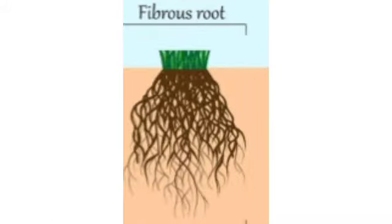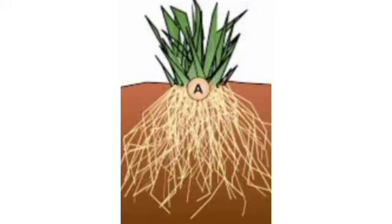Then fibrous roots. Some plants like grasses, wheat and coconut don't have a main root — they have a bunch of small roots called fibrous roots. They have many thin, hair-like roots and a bushy appearance. Some examples are grass, wheat, onion and garlic. They are called fibrous roots.